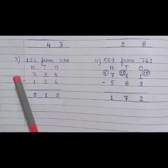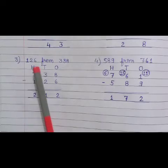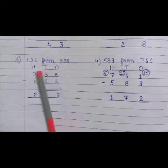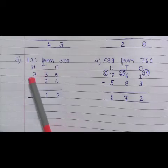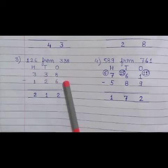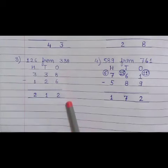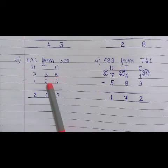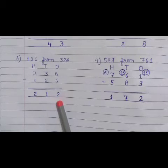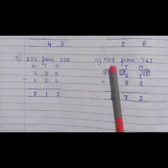Now 126 from 338. 1s, 10s, and 100s. 338 minus 126. 8 minus 6 equals to 2. 3 minus 2 equals to 1. And 3 minus 1 equals to 2. So 212 is our answer.